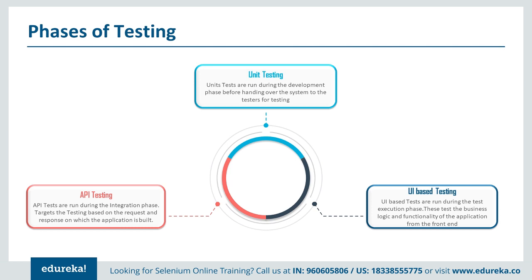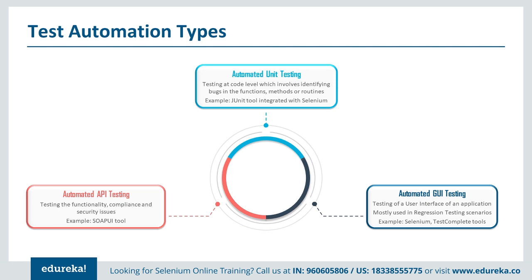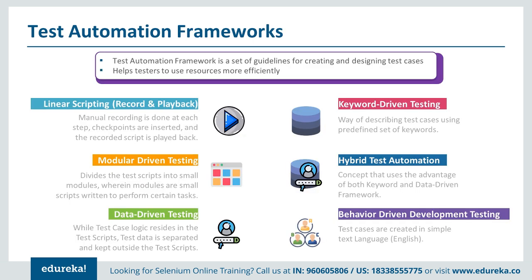For automation of each testing phase: unit testing can be automated using tools like JUnit and TestNG. API testing can be automated using the SoapUI tool. For automated GUI testing — covering application functionality and user interface — tools like TestComplete and Selenium are used, mostly for regression testing scenarios. These are the different types of automation frameworks and tools available for testing an application.